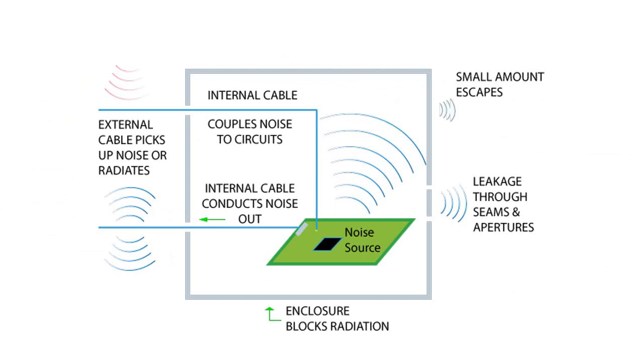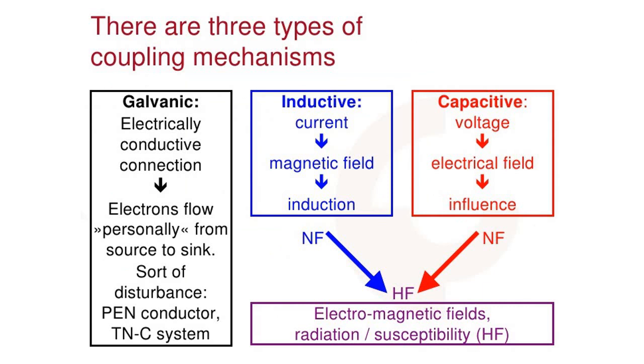Electromagnetic signals are generated in electrical and electronic systems and can propagate inside the system or even outside. This propagation can work along lines or through radiation. Looking at the connections in an electrical or electronic system, we can identify three different coupling paths.